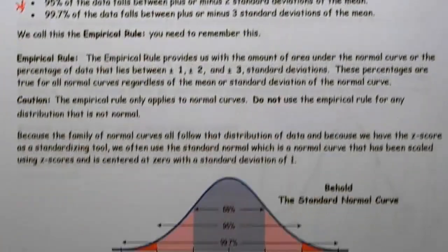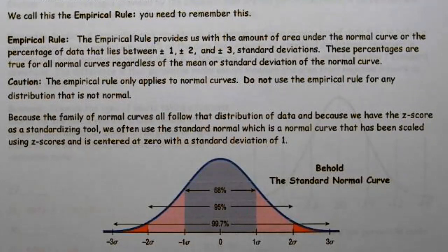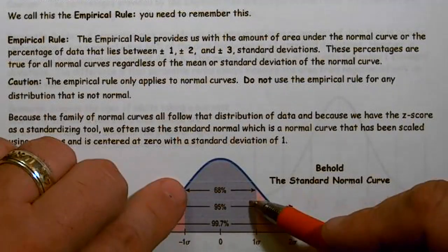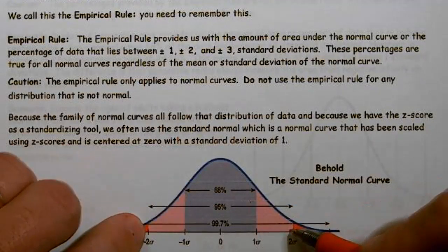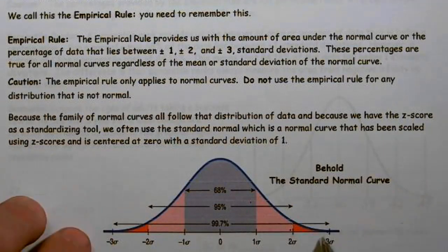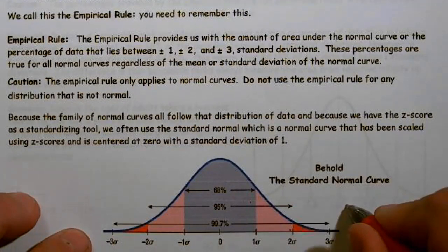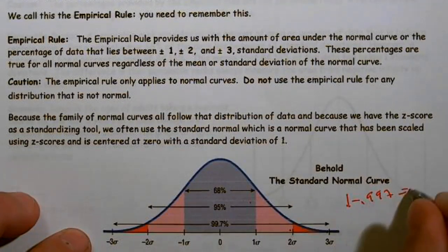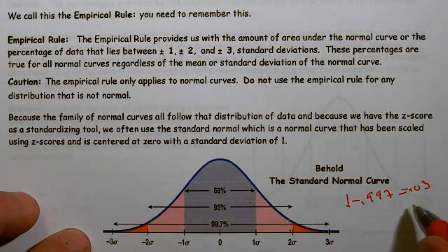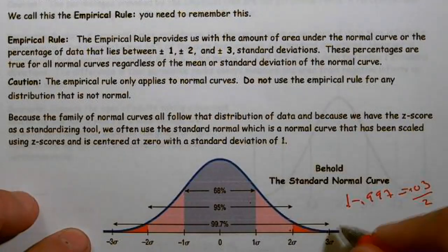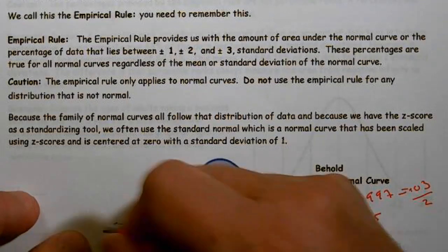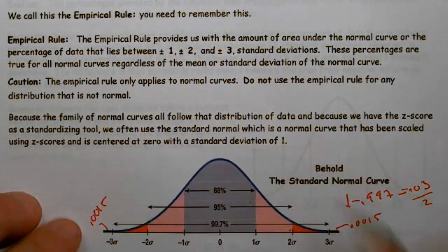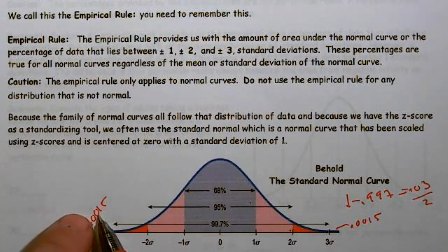Because all normal distributions follow the same percentages, we can standardize them and always apply the empirical rule. So for the standard normal: 68% of the data is within plus or minus one standard deviation, 95% within plus or minus two, and 99.7% within plus or minus three. That leaves 0.03 in the tails combined — split into 0.0015 in each tail — a very small percentage.